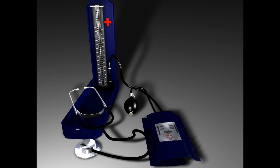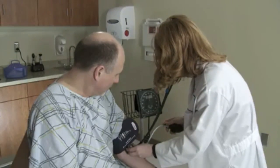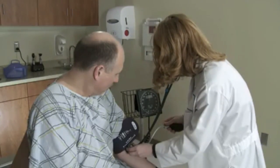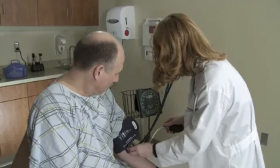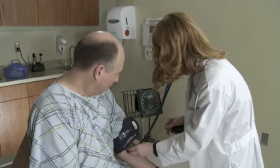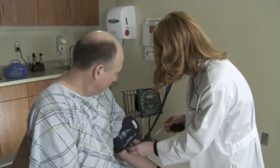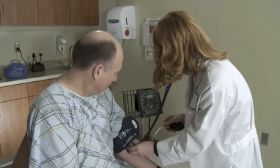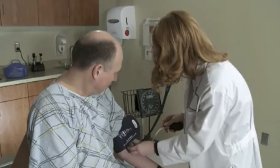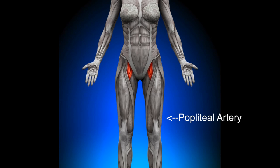The blood pressure is measured by inflating the sleeve over the expected systolic pressure. Next, the air is released slowly while listening for pulsation of the brachial artery. Upon hearing the first pulse, the reading is noted which represents the systolic pressure. When the sound vanishes completely or a definite change is heard, it is considered the diastolic pressure. Blood pressure of the popliteal arteries at the thigh and the radial arteries at the forearm are both measured the same way.